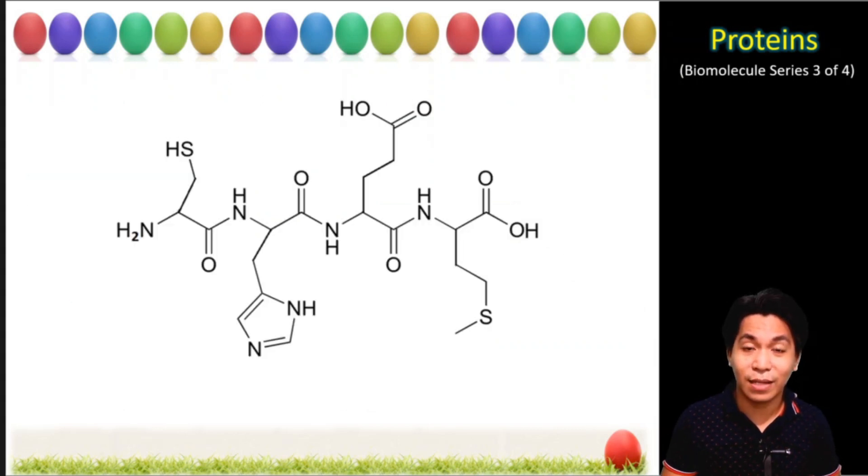What about in this example, can you find how many amino acids are present? The technique is to find the C double bond O attached to the nitrogen. So after dividing the protein into their amino acids, how many amino acids were you able to find?